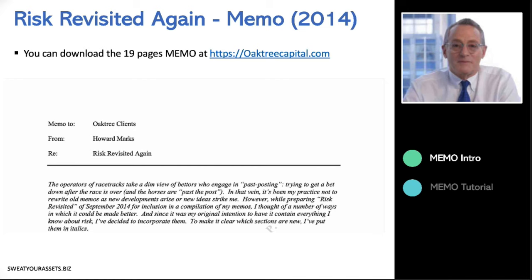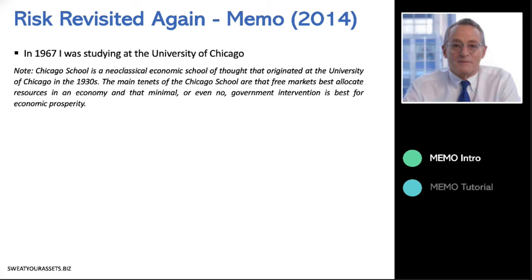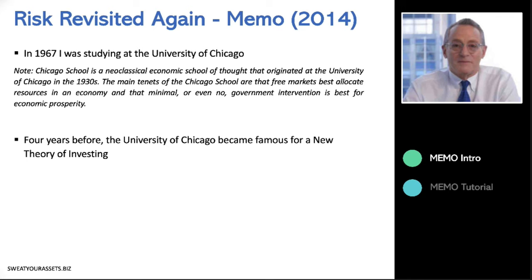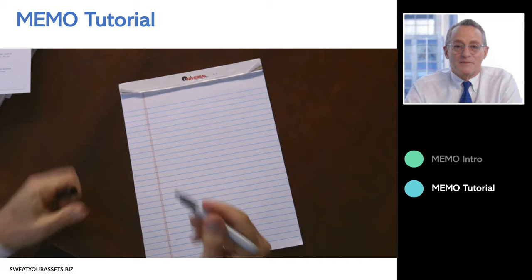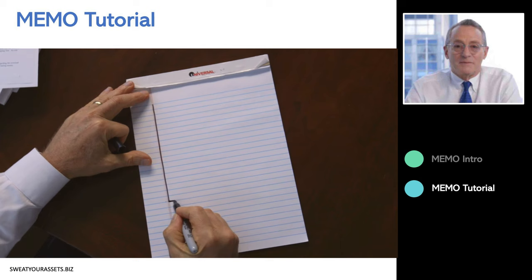Before you read 'Risk Revisited Again,' I'd like to give you an example that illustrates my thinking on the subject of risk. In 1967, I arrived at the University of Chicago for graduate school, just three or four years after a new theory of investing had been developed. Central to it was the relationship between risk and return, and a lot of it was built around one graphic. Let me show you what I have in mind.